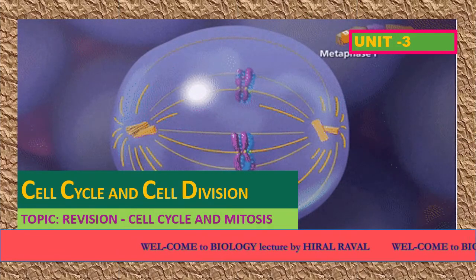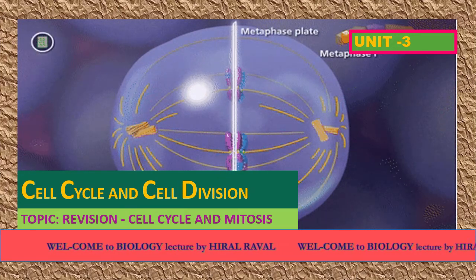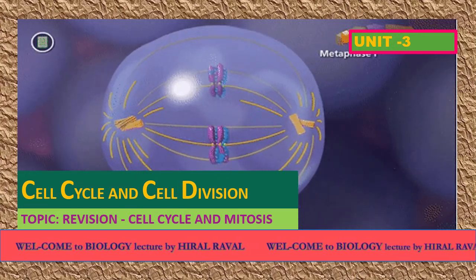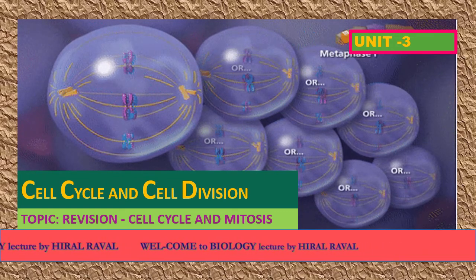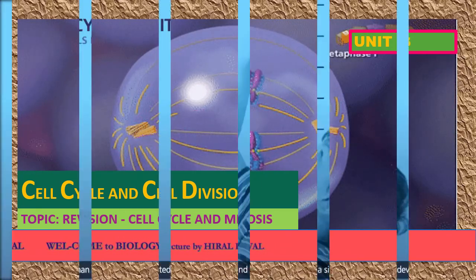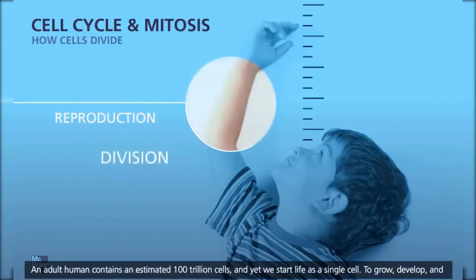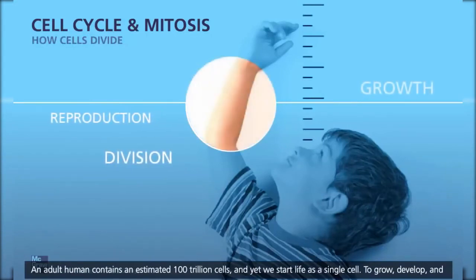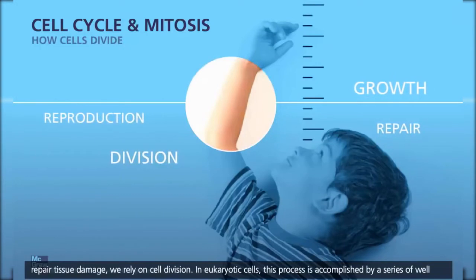Hello students, today we will revise whatever we have completed till now — cell cycle and mitosis. Adult humans contain an estimated 100 trillion cells, yet we start life as a single cell. To grow, develop, and repair tissue damage, we rely on cell division.